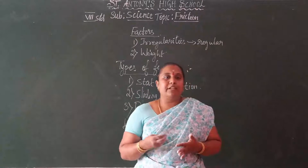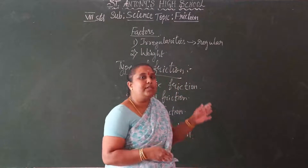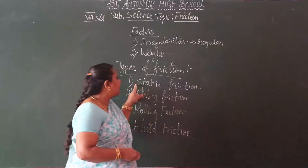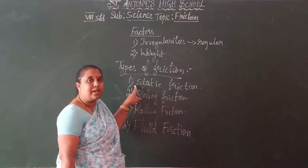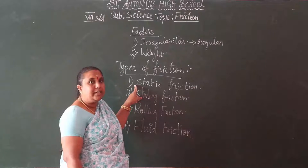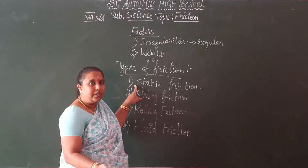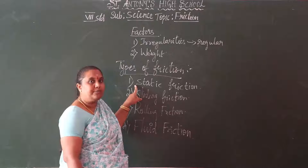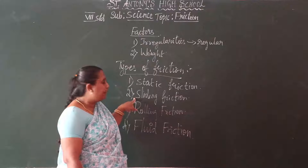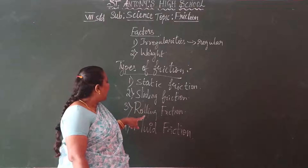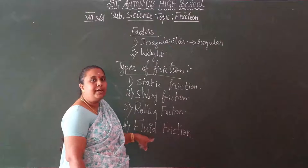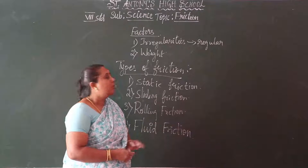So these are the types of friction. What are the four types of friction? One is static friction — applied before moving the object. The others are sliding friction, rolling friction, and fluid friction.